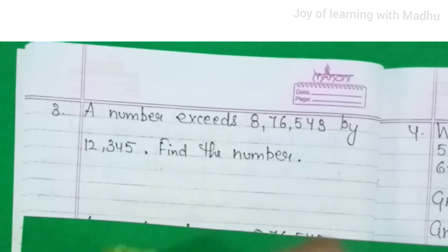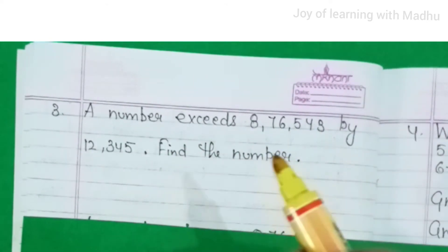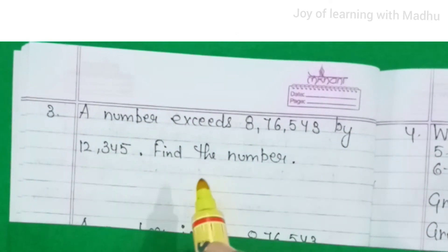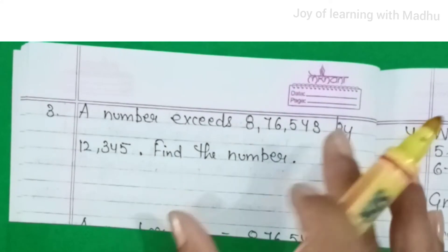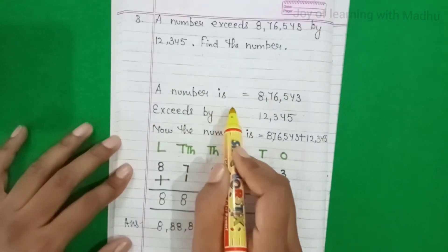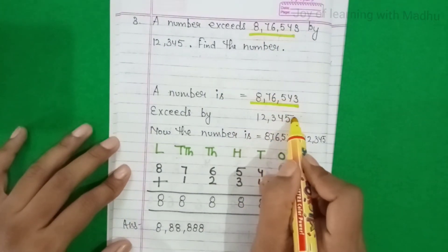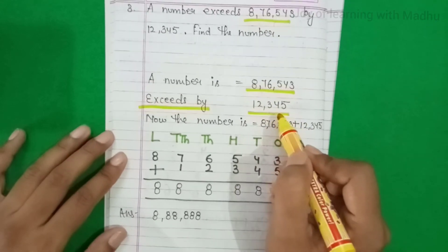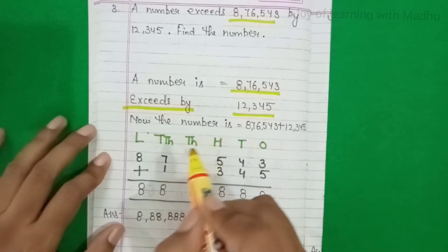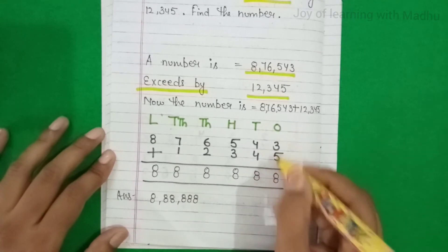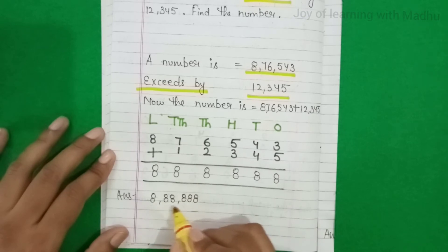Exceeds मतलब होता है बढ़ जाना। जैसे आपके पास 5 chocolates हैं और कोई 2 और दे दे, तो 5 chocolates बढ़ गई। So, a number is 8,76,543 और वो 12,345 से exceeds करता है। अब उस number को find करने के लिए दोनों numbers को add करेंगे। After adding, we get 8,88,888 — this is the answer.